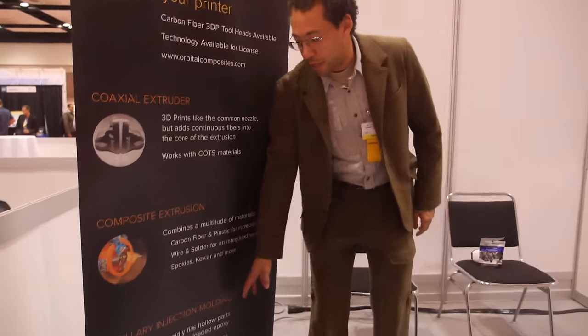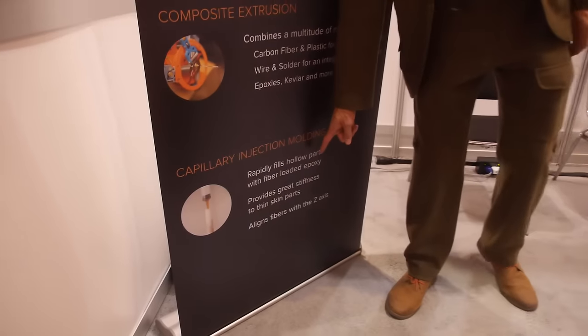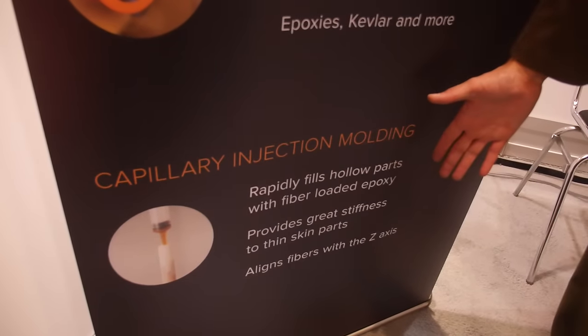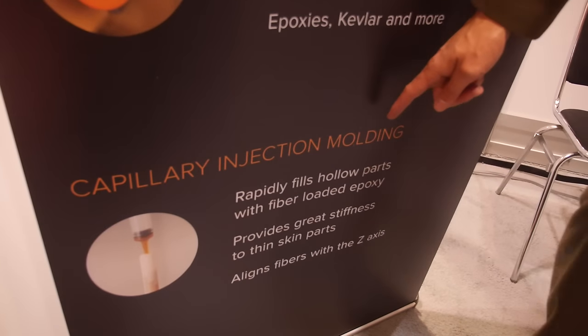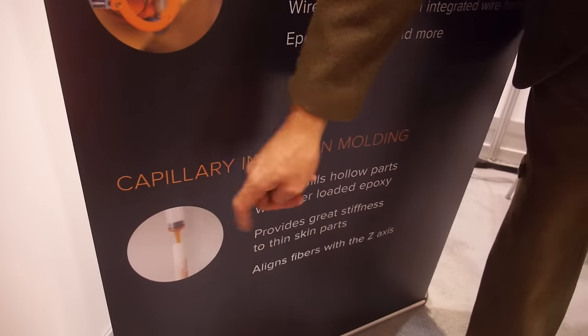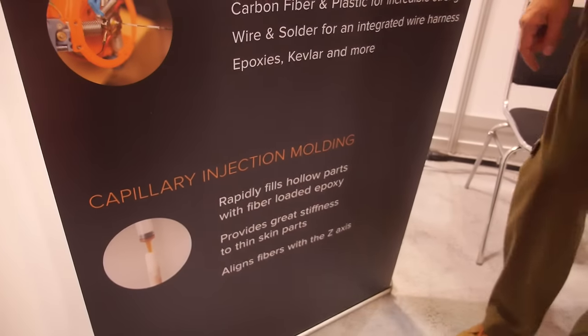One of the other tricks we have is capillary injection molding. This enables us, if we add short-chopped fibers into our injection material, into our epoxies, we can get fibers to be aligned with the z-axis across the print layers, which dramatically increases the print quality and the end strength. You can build a lot quicker by printing out a very thin shell and injection molding it in place.